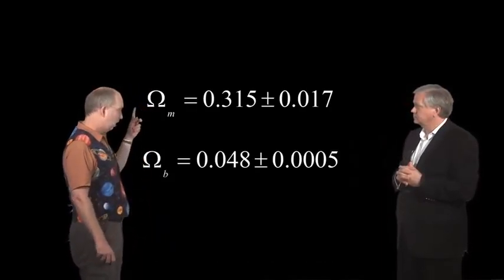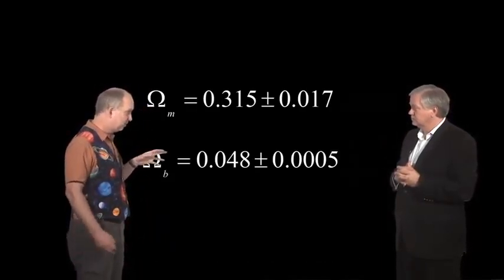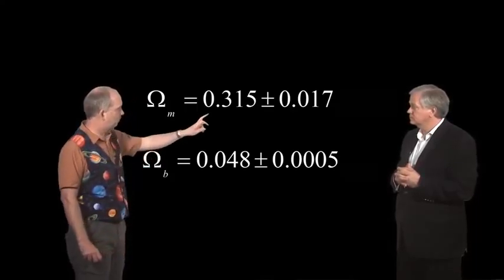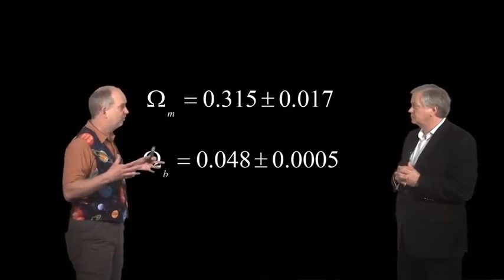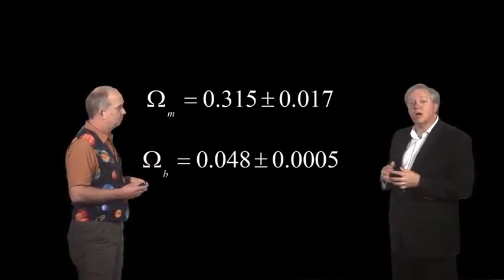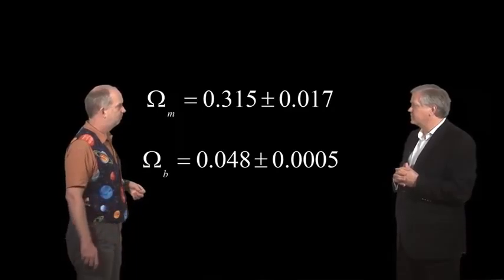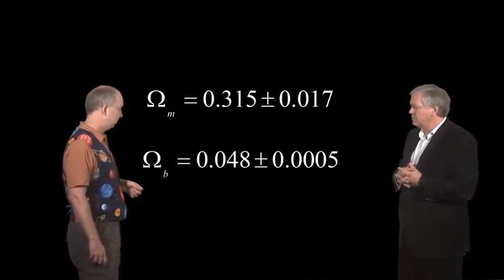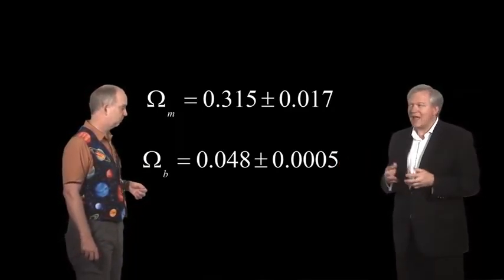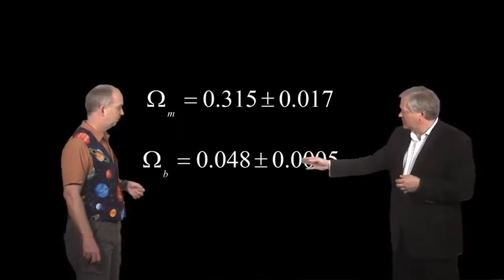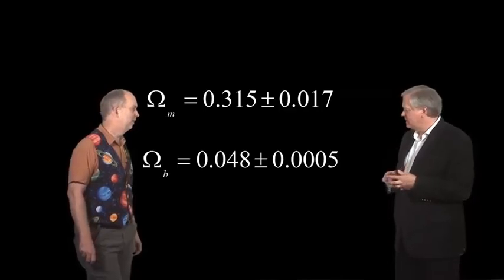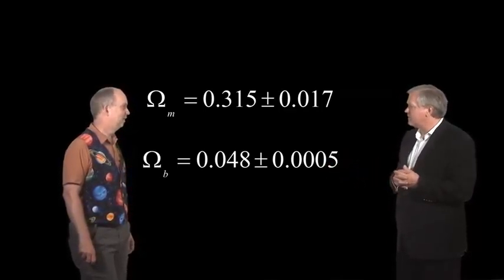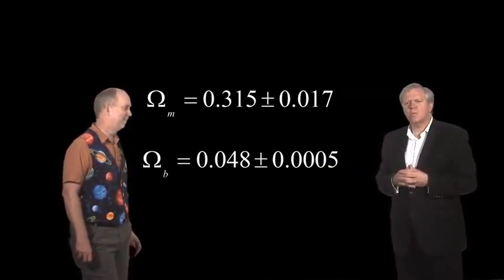You can learn omega matter, so all matter, dark baryons, is about 31.5% of the critical density of the universe. And this is from the Planck experiment, the best experiment we have at this point. And then the other thing we can measure out is how many baryons, or the atoms, we're used to. Look at the exquisite precision that we can do that with. It's 0.048, and then three zeros and a five as the uncertainty.